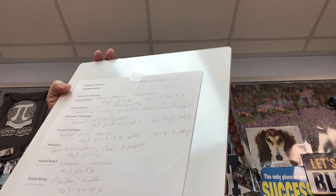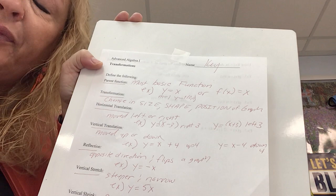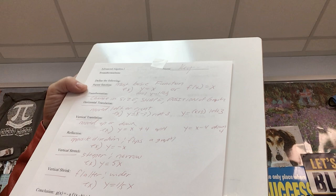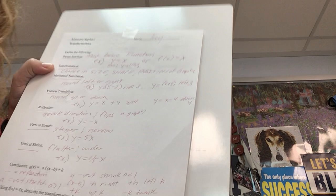Now let's go to your vocabulary sheet. We have talked about most of these types of transformations. A transformation means to change our equation or change our graph — changing the equation will transform the graph. A parent function is our most basic function. Right now we only have one parent function, for linear equations: y = x or f(x) = x, with slope 1 and y-intercept 0, 0.